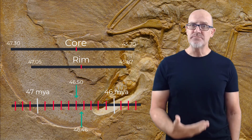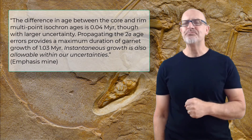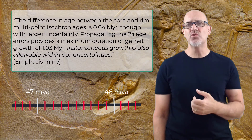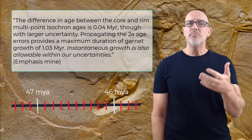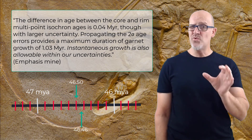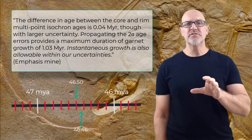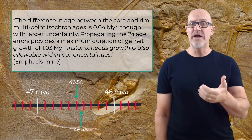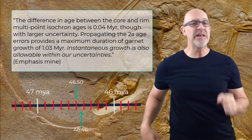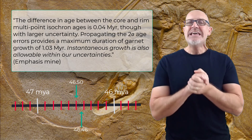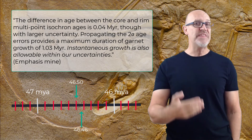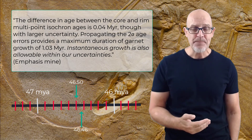And this isn't my interpretation. The authors went on to say: the difference in age between the core and the rim multi-point isochron ages is 0.04 million years — that's only 40,000 years — though with larger uncertainty. Propagating the two-sigma age errors provides a maximum duration of garnet growth of 1.03 million years. But notice this next statement: 'Instantaneous growth is also allowable within our uncertainties.' This means that some metamorphic crystals could possibly have grown very rapidly.